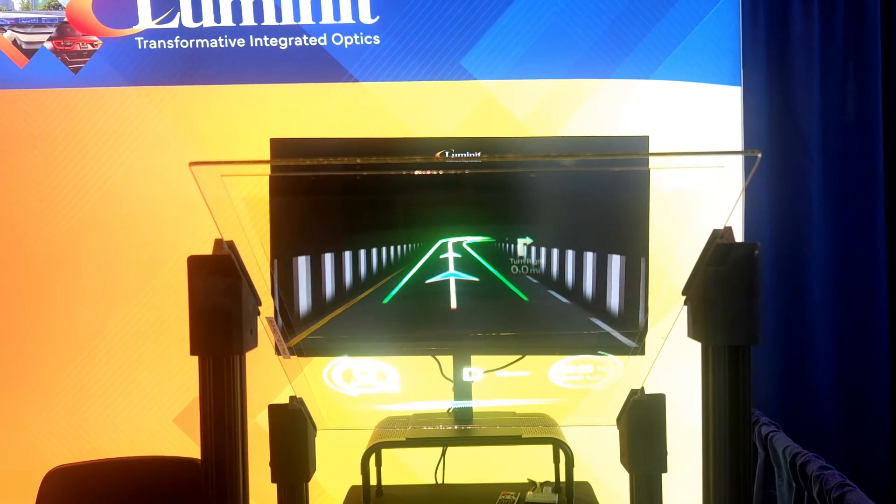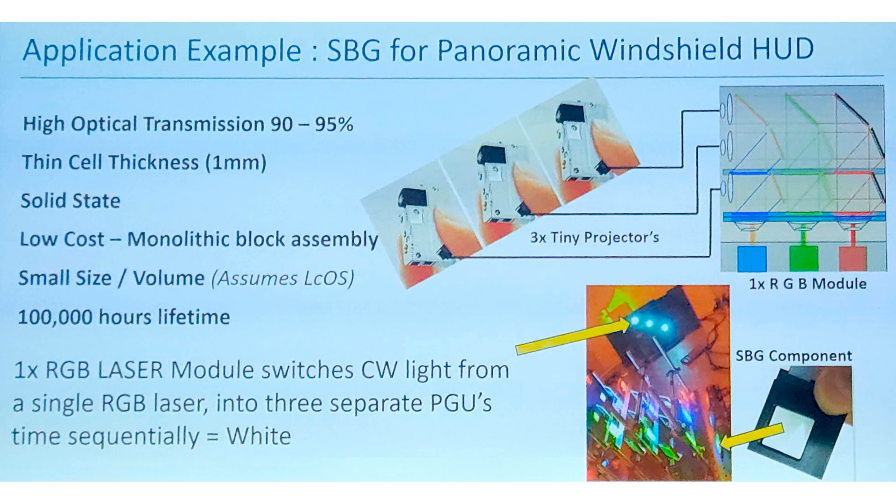Because AR requires a laser light source, we're considering cost savings by illuminating multiple projectors from a single source. Our CEO's talk earlier discussed using switchable Bragg gratings, where you take a channel from a specific wavelength — you need all three to create white — and switch from one channel to another using current. You can have three projectors switched efficiently from one source, reducing cost and volume for the multiple projectors needed for a large display.